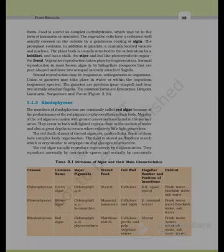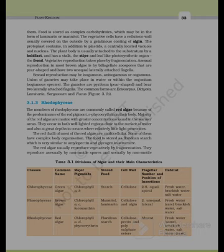The divisions of algae and their main characteristics are summarized in a table. Chlorophyceae (green algae): major pigments chlorophyll A and B; stored food starch; cell wall cellulose; flagella 2–8, equal and apical; habitat fresh water, brackish water and salt water. Phaeophyceae (brown algae): major pigments chlorophyll A, C and fucoxanthin; stored food mannitol and laminarin; cell wall cellulose and alginate; flagella 2, unequal and lateral; habitat mainly salt water, rarely fresh water. Rhodophyceae (red algae): major pigments chlorophyll A, D and phycoerythrin; stored food floridian starch; cell wall cellulose, pectin and polysulfate esters; flagella absent; habitat mostly salt water, some fresh water.